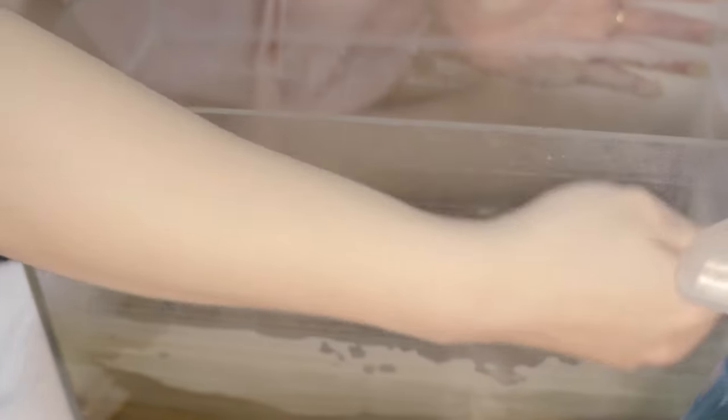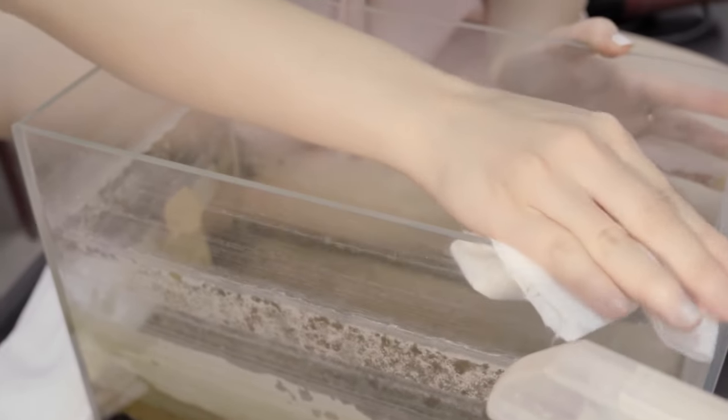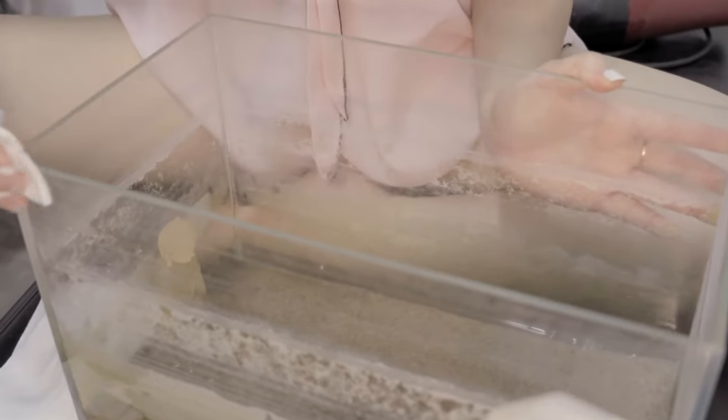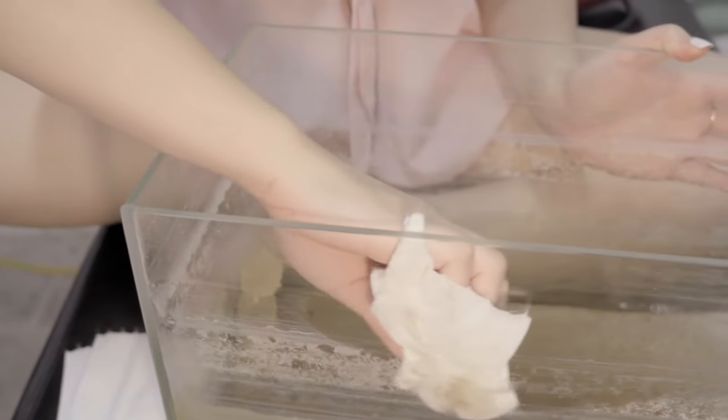Step one, gather your supplies. Paper towels - use soft paper towels for cleaning the inside of the fish tank. Water - prepare clean water for moistening the paper towels.